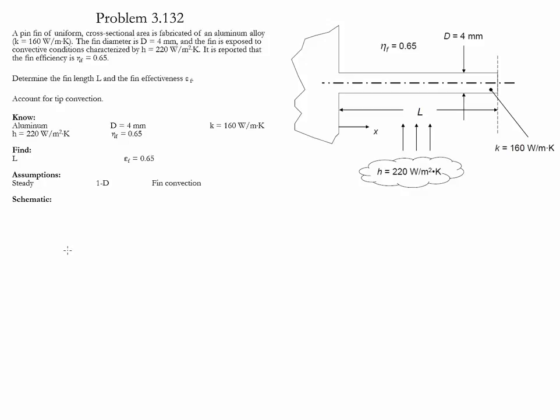We're going to start the analysis with the definition of efficiency for a pin fin, which is given as hyperbolic tangent of m LC divided by m LC. Remember that the value of LC is a corrected length which is basically L plus D over 4. This correction is used to account for the convection at the tip.